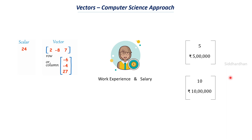That covers vectors. I hope you understand what vectors mean and how we approach them in machine learning. In upcoming videos I will explain vector operations like vector addition, vector multiplication, dot products, and cross products — both theoretically and in Python. After that we'll deal with matrices. Let me know in the comments if you have any doubts. Thank you so much.